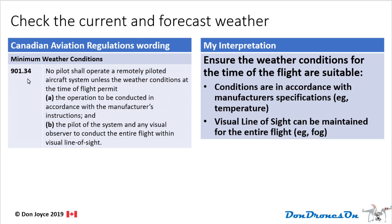The next regulation is 901.34, Minimum Weather Conditions. This means you should ensure the weather conditions for your flight are suitable — not only when you take off but for the duration of your flight. These conditions should be in accordance with the manufacturer's specifications. For example, if your manufacturer indicates you should not be taking off in temperatures below minus 20 Celsius and it's minus 25 out, you shouldn't be flying in those conditions. In addition, make sure that the weather is conducive to ensuring you still have visual line of sight throughout the entire flight — for example, if there's fog or smoke from a campfire obscuring your visual line of sight, don't take off.